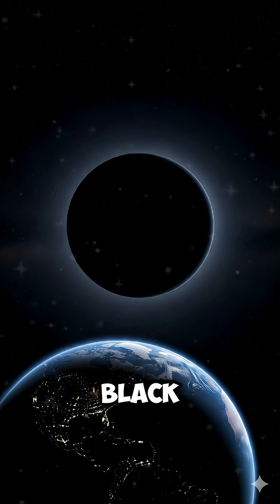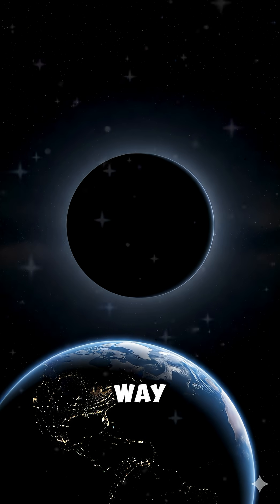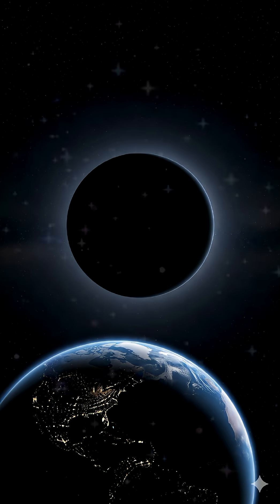If our sun were replaced by a black hole of the same mass, Earth would keep orbiting almost exactly the same way, it just wouldn't get sunlight anymore.